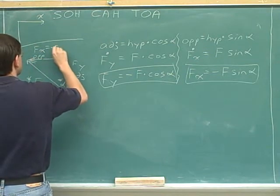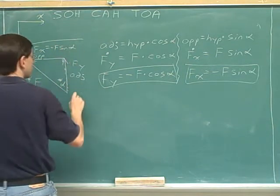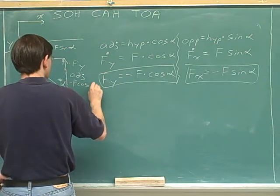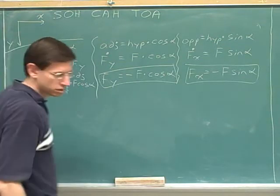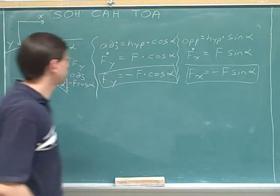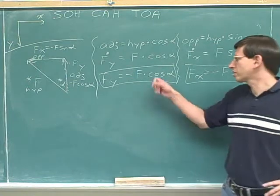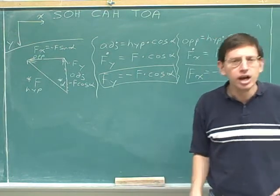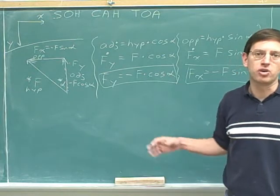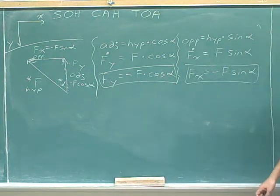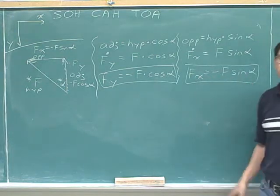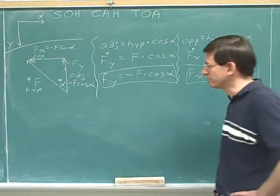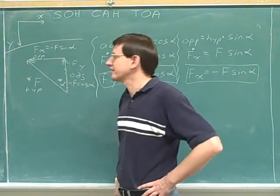This is another problem where the cosine gave you the Y component, not the X component. Usually, the cosine will give you the X component, but far from always. Sometimes the cosine gives you the Y component. Usually the sine gives you the Y component, but sometimes the sine gives you the X component. So don't just assume that cosine means X or sine means Y. You have to work it out for every problem based on the details of that problem by asking yourself where the adjacent side and the opposite side are.